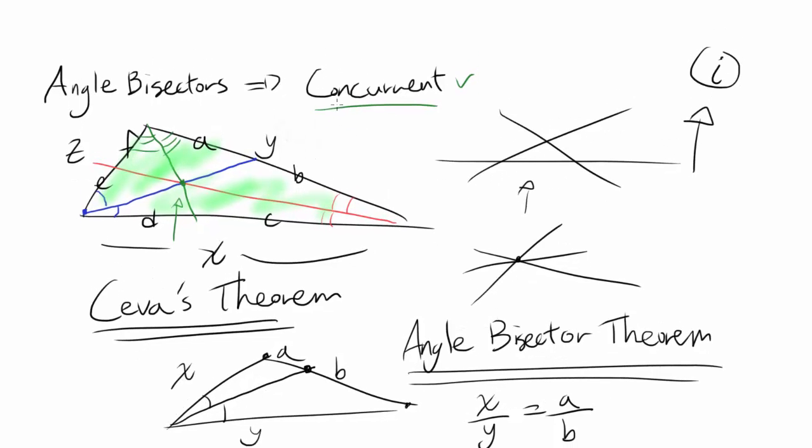By angle bisector theorem, let me write it up top. A divided by B is equal to Z divided by X, by angle bisector theorem. I'm just looking at this triangle and this triangle. A divided by B is equal to Z divided by X. That's what I got.